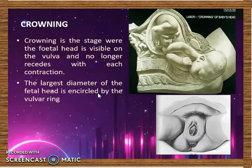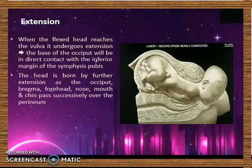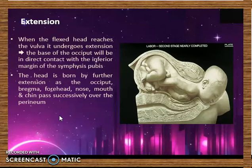During extension, the base of the occiput will be in direct contact with the inferior margin of the symphysis pubis, and the fetal head is born. The chin, face, and nose of the baby sweep the perineum and are born. Extension brings about the birth of the fetal head — the head is born by further extension as the occiput, bregma, forehead, nose, mouth, and chin pass successively over the perineum.